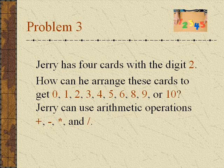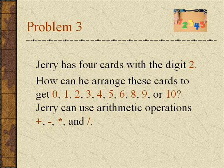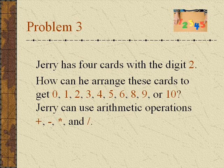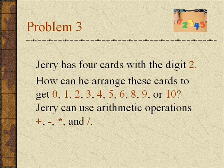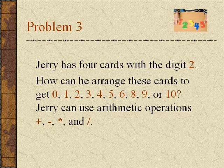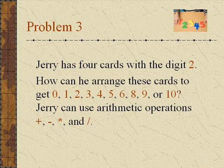Problem 3. Jerry has 4 cards with digit 2. How can he arrange these cards to get 0, 1, 2, etc., up till 10? Jerry can use arithmetic operations: addition, subtraction, multiplication, and division.